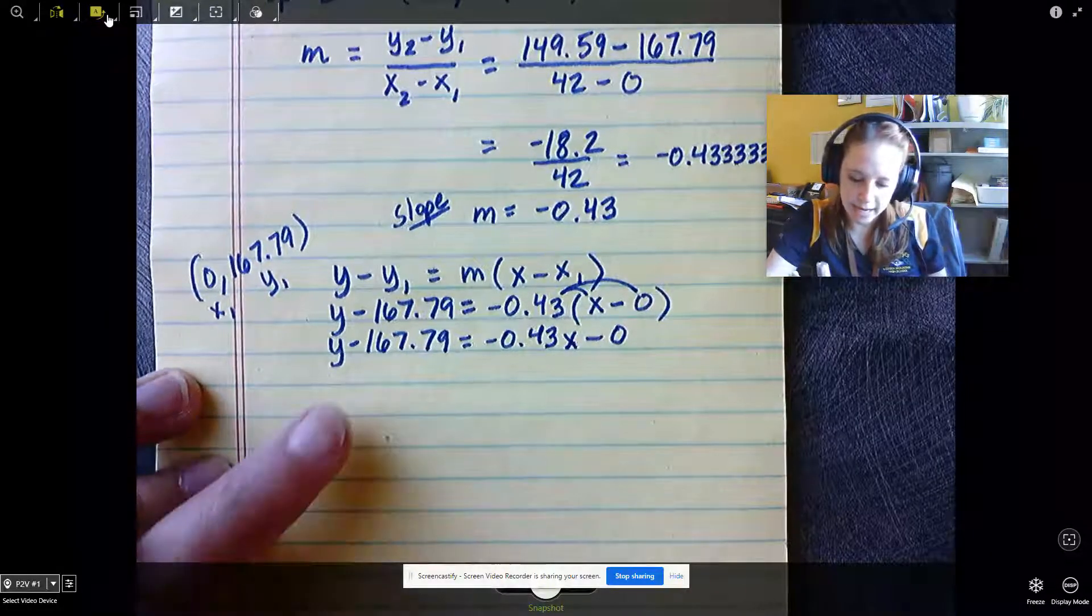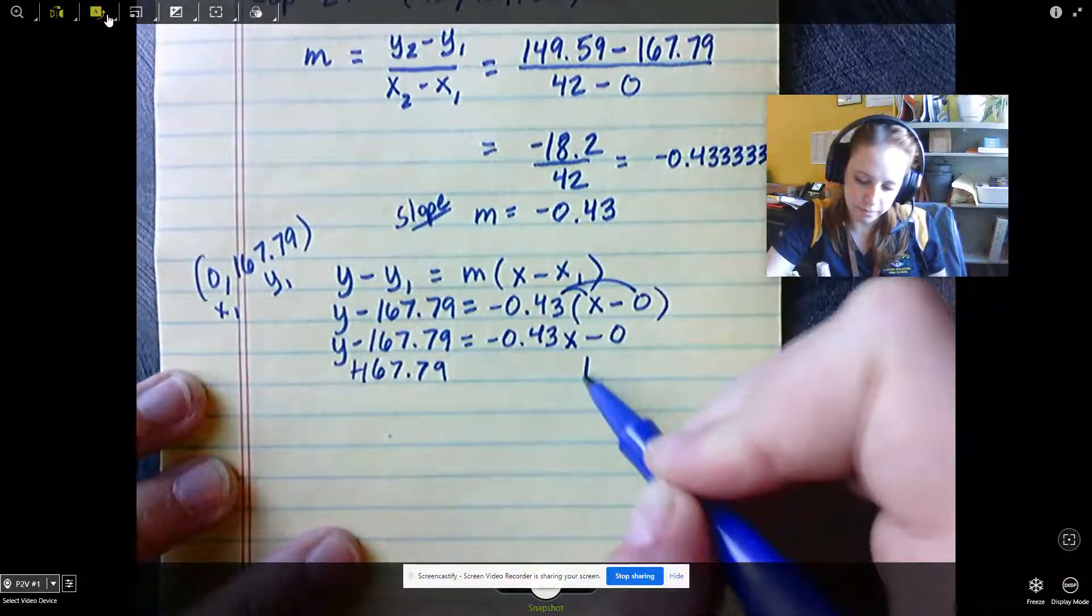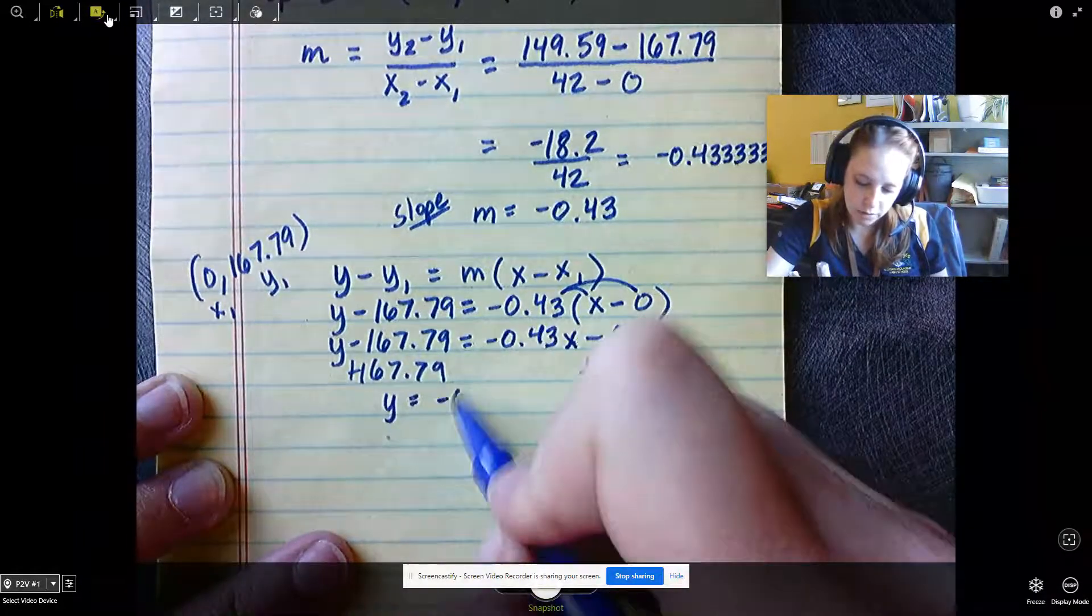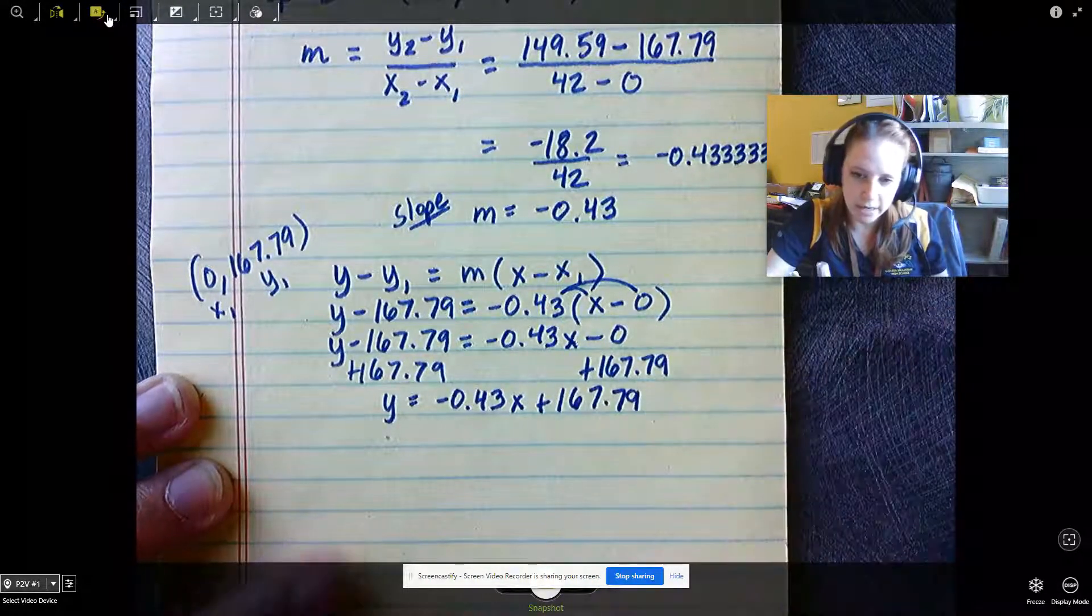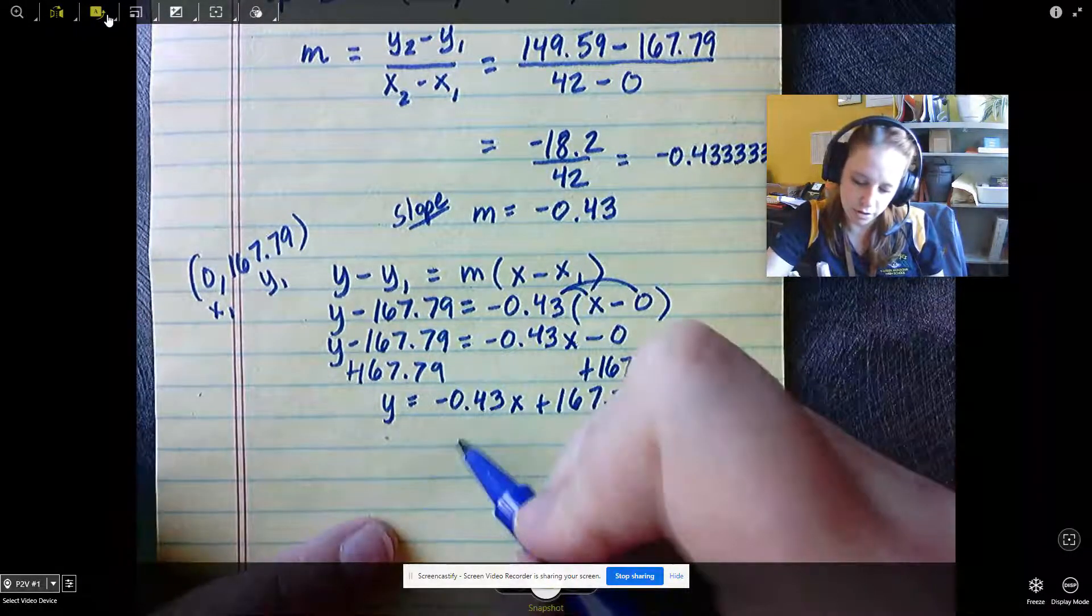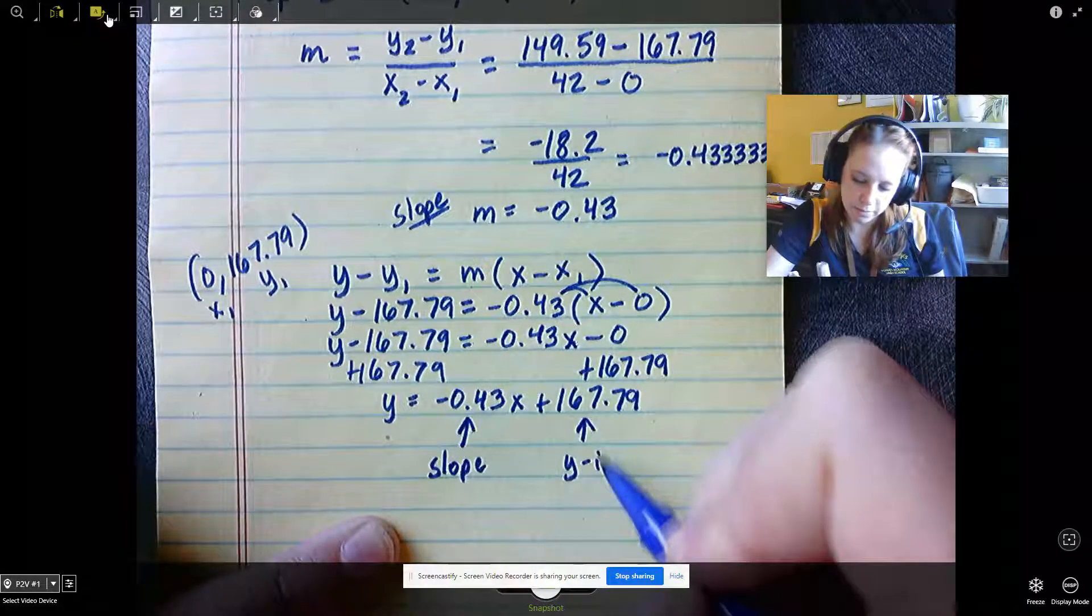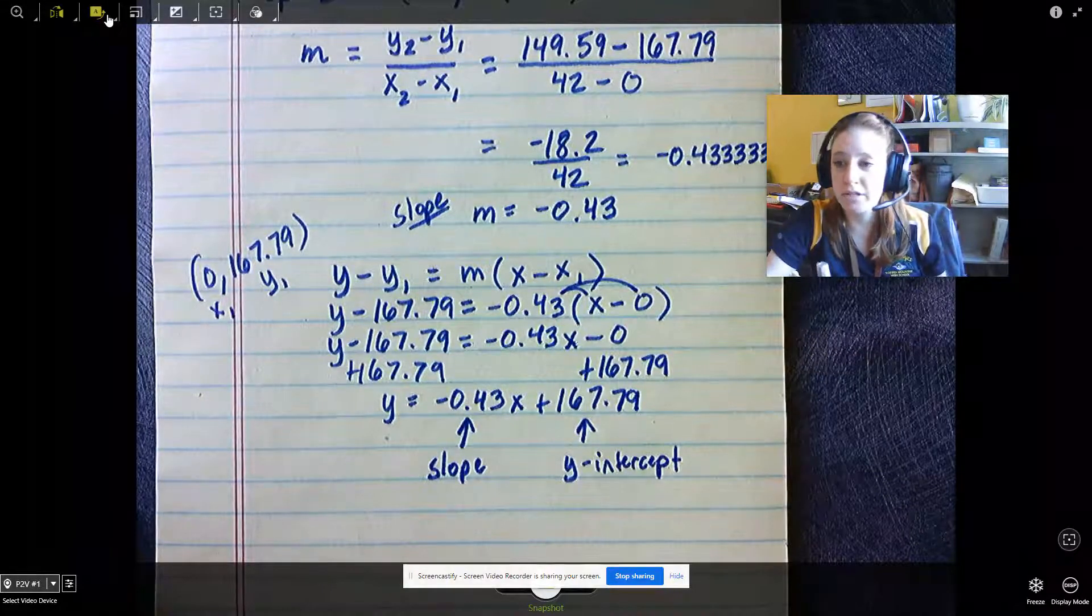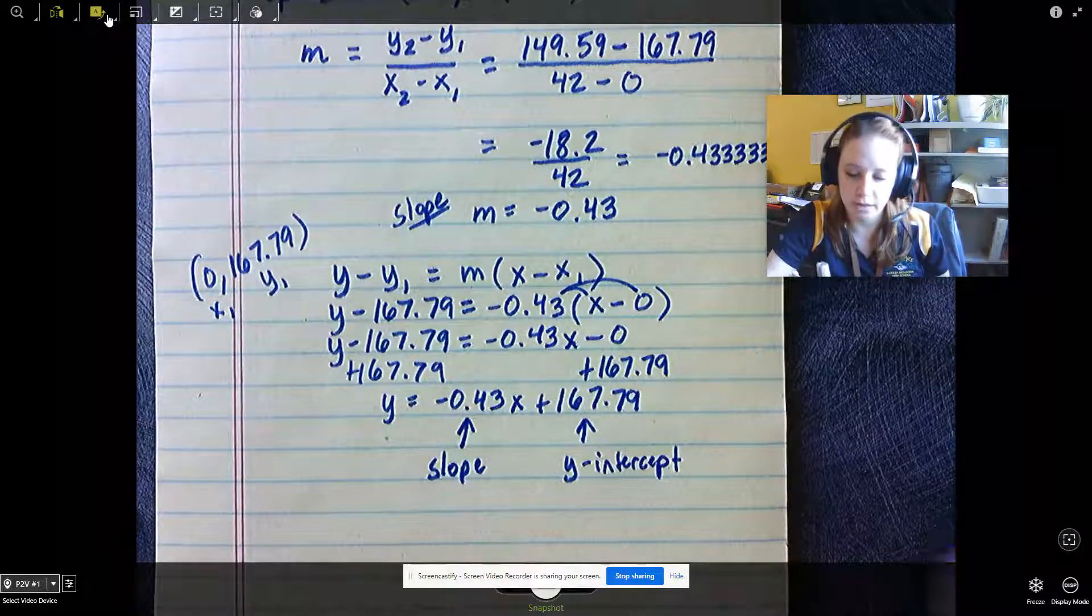Finally, we're going to isolate the y by adding 167.79. As I stated before, we could have already gone to this equation by knowing that this coordinate point represents a y-intercept. So here's our slope, and here's our y-intercept, which matches our coordinate point. This was proof that we got the correct y-intercept and the correct slope.